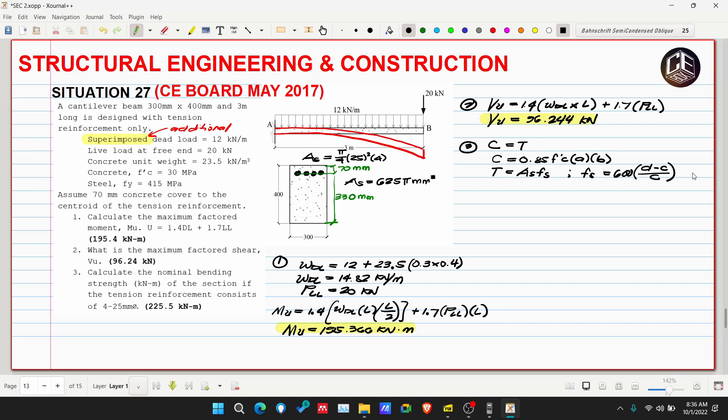Let's assume steel yields, so our Fs is equivalent to Fy. This comes from equilibrium condition.